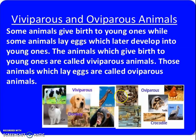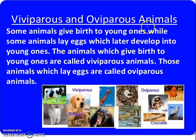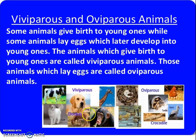Animals are divided into two categories: one is viviparous animals and the other is oviparous animals.